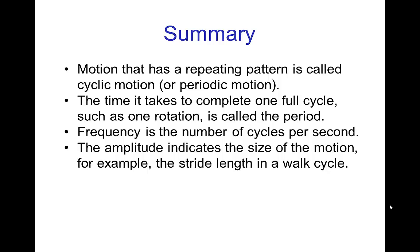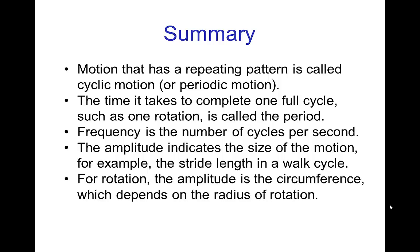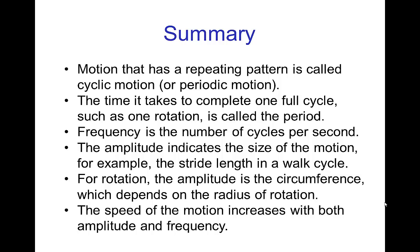The amplitude indicates the size of the motion — for example, the stride length in a walk cycle. For rotation, the amplitude is the circumference traveled as we move around the circle, which depends on the radius of rotation. Don't forget that speed increases with both amplitude and frequency, and that period and frequency are closely related.